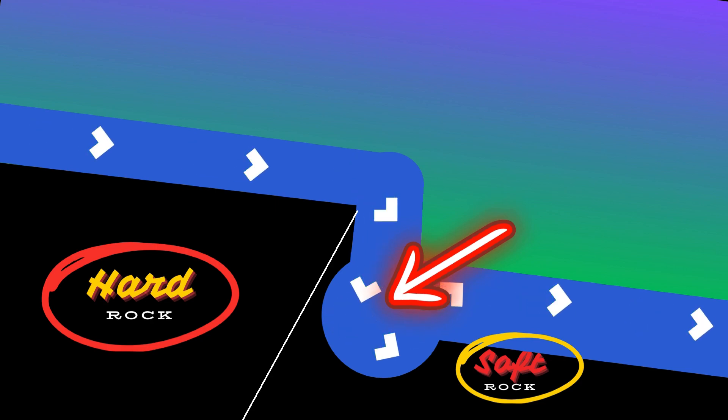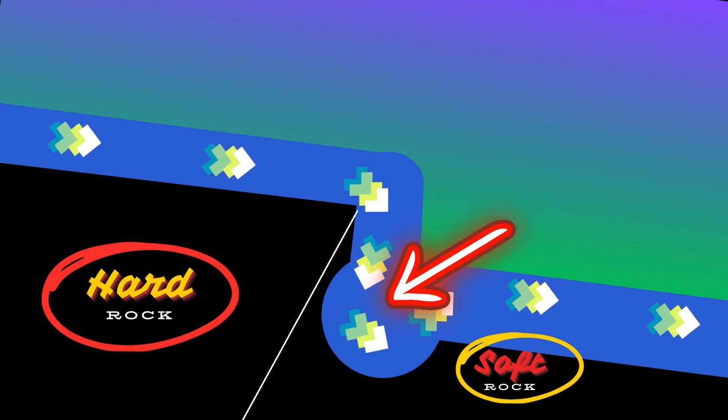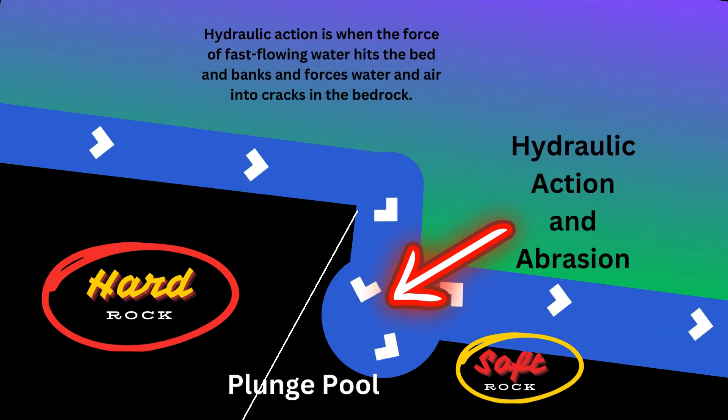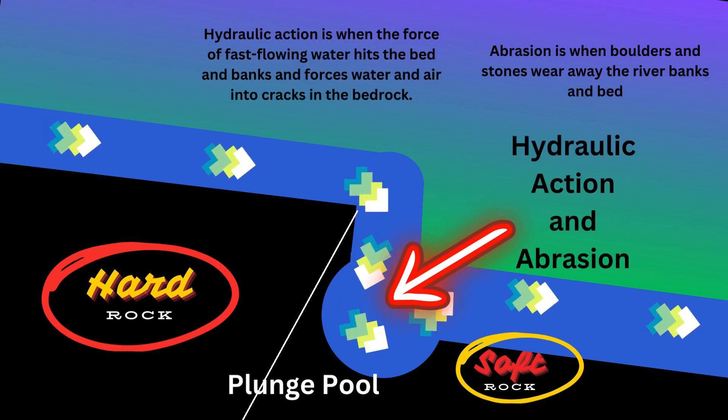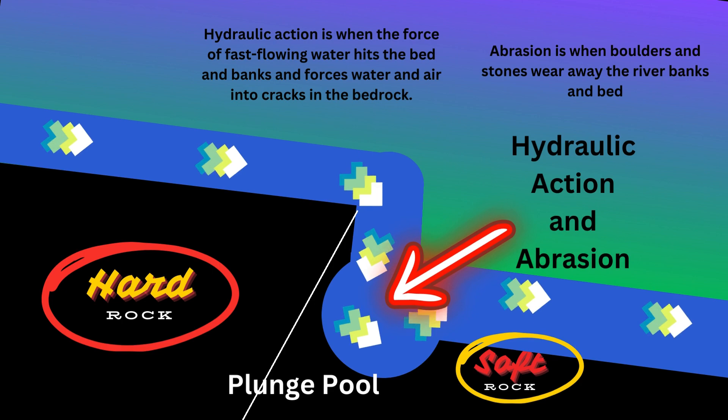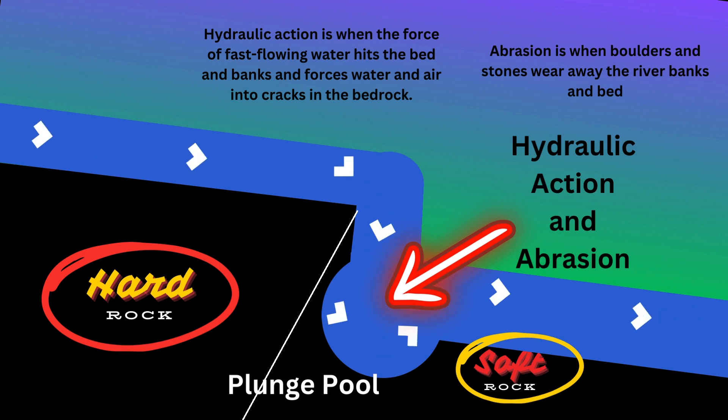As the water cascades over the edge of the waterfall, it creates a plunge pool at the base through hydraulic action and abrasion. This plunge pool deepens over time.